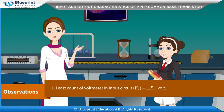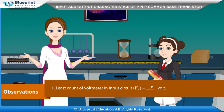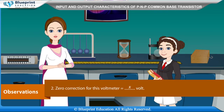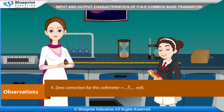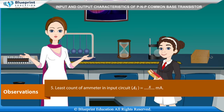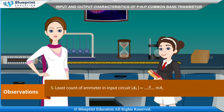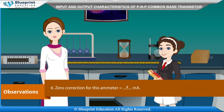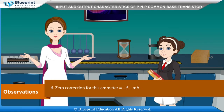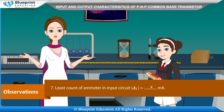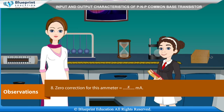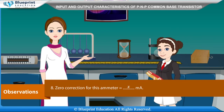Observations: Least count of voltmeter in input circuit V1 is equal to X volt. Zero correction for this voltmeter is equal to X volt. Least count of ammeter in input circuit A1 is equal to X mA. Zero correction for this ammeter is equal to X mA.